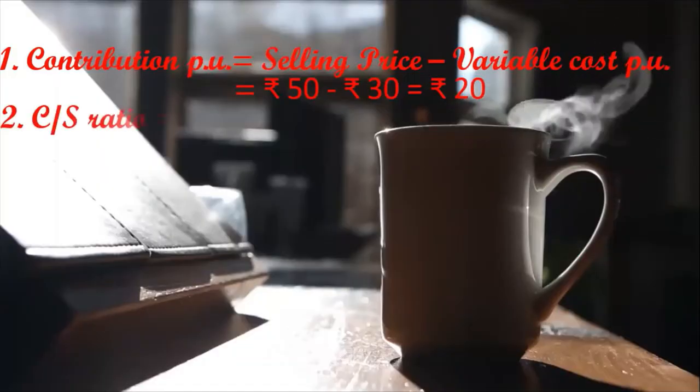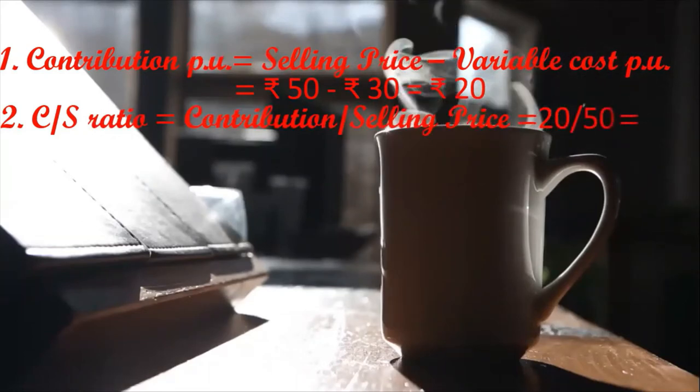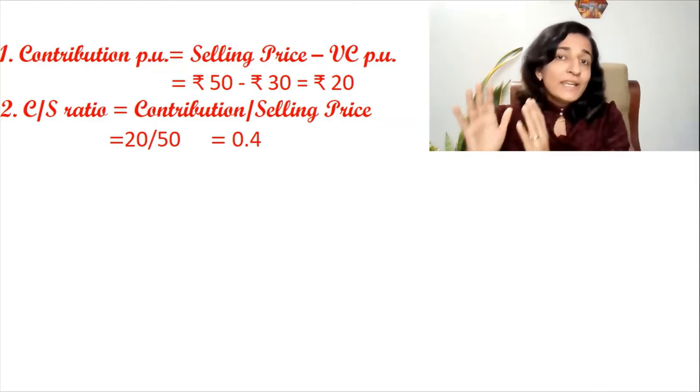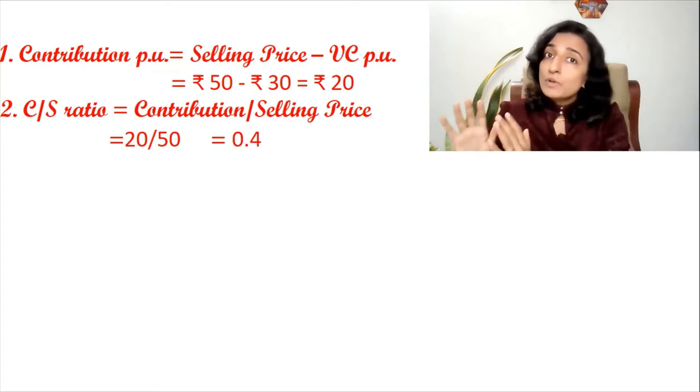The next formula is the C/S ratio — C standing for contribution and S standing for sales. The C/S ratio = contribution divided by sales. It simply means what proportion of sales is the contribution. If we calculate it, we get 40% or 0.4 — meaning 40% of the sales is the contribution, and 40% of sales will contribute towards your fixed cost and your profit.